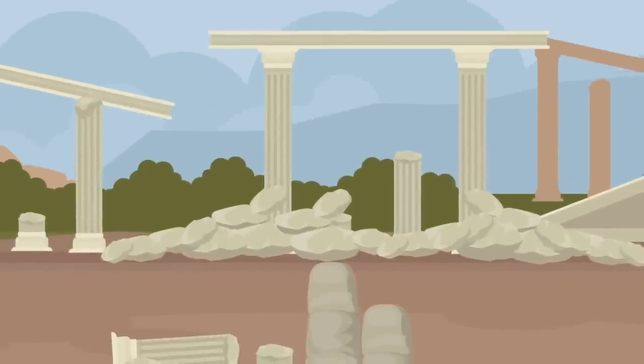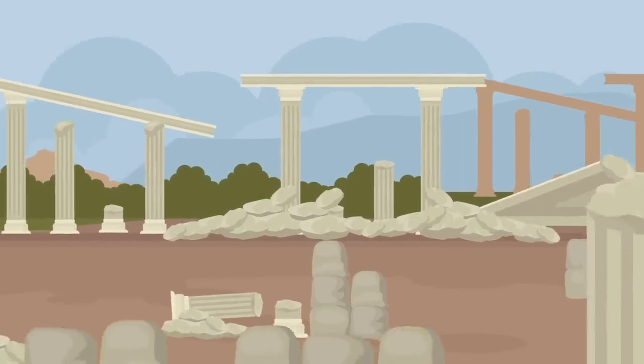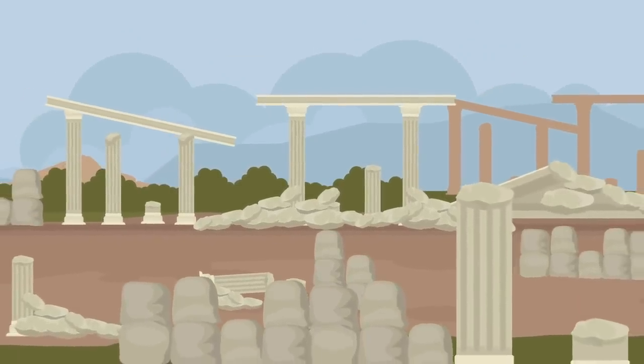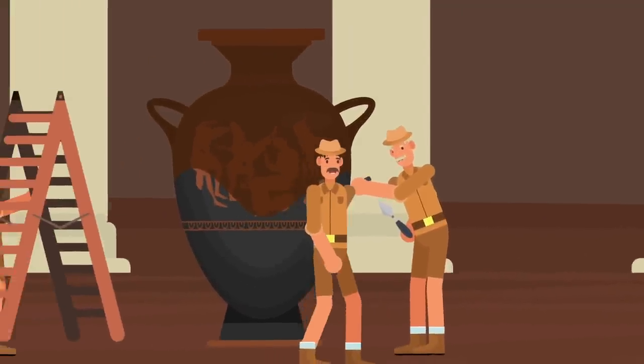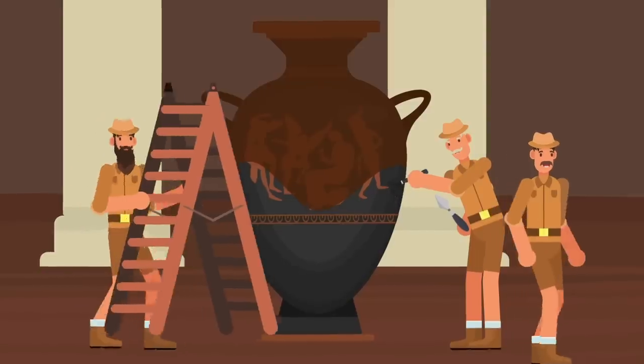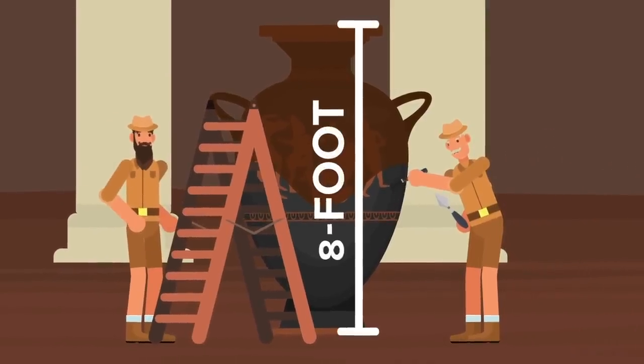A team of archaeologists uncovers a giant ceramic vase in the ruins of an ancient Greek city. They carefully brush away the sand and debris that surrounds it. The head archaeologist grabs a ladder and places it gently against the eight-foot-tall vase.